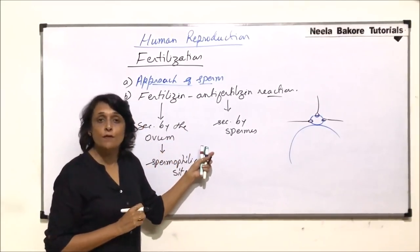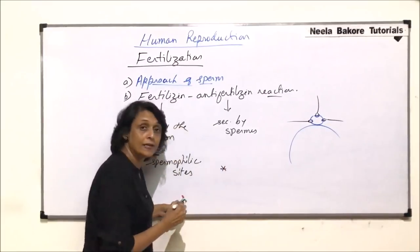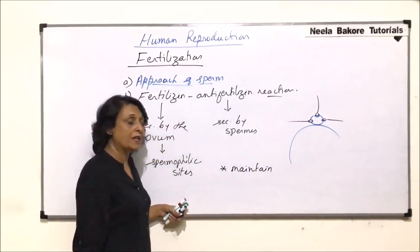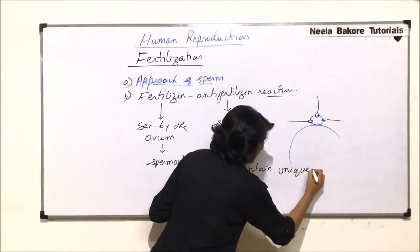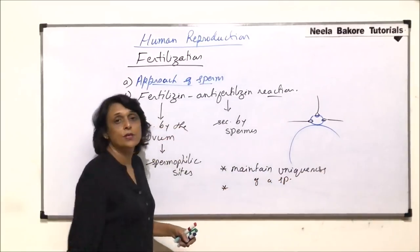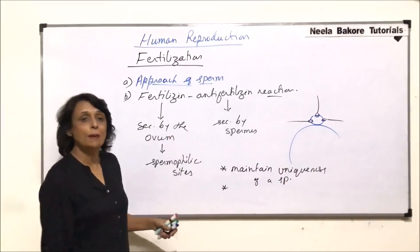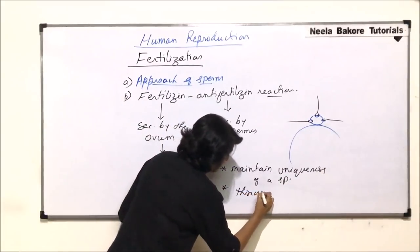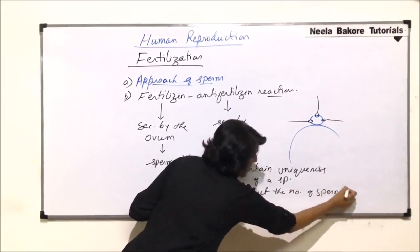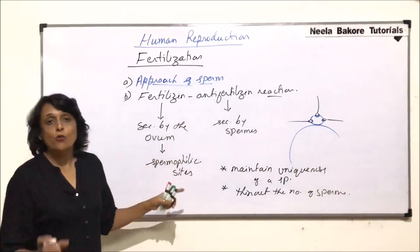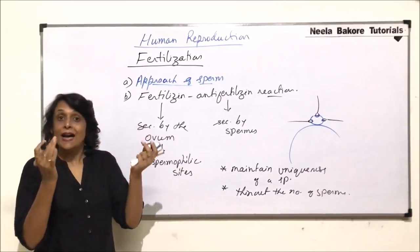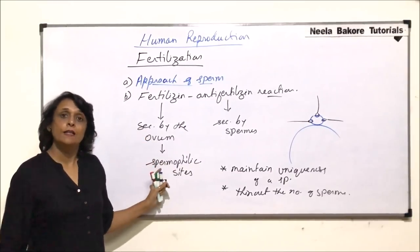The significance of fertilizing, anti-fertilizing reaction is to maintain specificity or uniqueness of a species. And second importance is to thin out the number of sperms. So now out of 100, even lesser sperms are actually getting attached to the outer surface of the ovum.